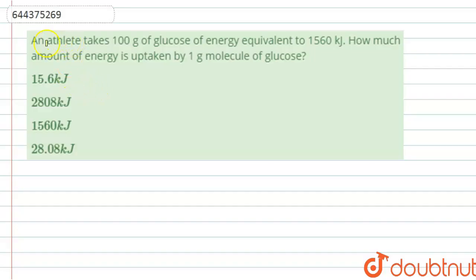Hello students, here the question is given: An athlete takes 100 grams of glucose of energy equivalent to 1560 kilojoules. How much amount of energy is uptaken by one gram molecule of glucose? The first option is given 15.6 kilojoules, second option is given 2808 kilojoules.